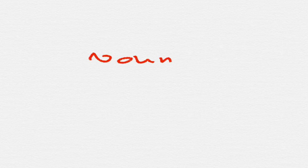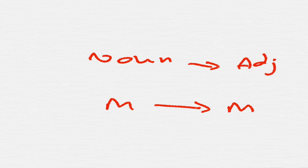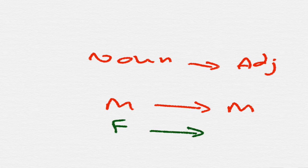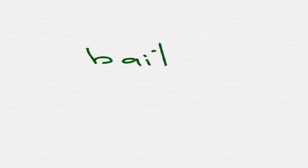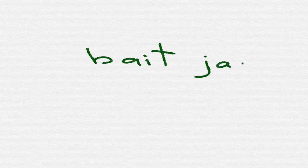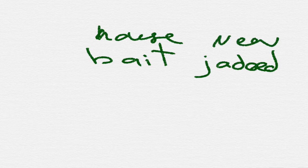In Arabic, if the noun is masculine, the adjective should also be masculine. Always in Arabic we start with the noun, followed by the adjective. For example, 'beit jadid' — 'beit' means house and 'jadid' means new. So 'beit jadid' means 'a new house.' Notice that both the noun and adjective end with a consonant, not a vowel.